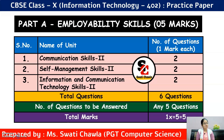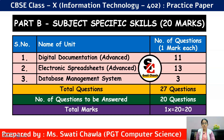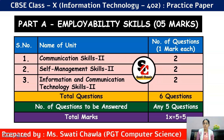As you can see, this is the blueprint or marking scheme for your question paper. Your paper will be divided into 3 sections: Section A, B, and C. Section A will have 6 questions, out of which you have to attempt any 5. Those questions will be from employability skills — Unit 1: Communication Skills, Unit 2: Self-Management Skills, and Unit 3: ICT Skills — 2 questions from each unit. Total 6 questions, attempt any 5.